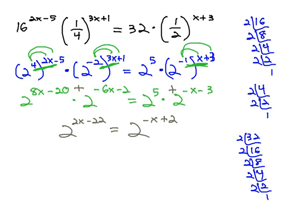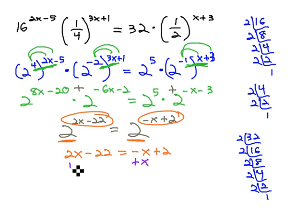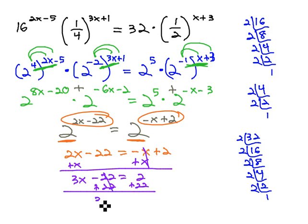Finally, we're ready, same base, we can set our exponents equal. 2x minus 22 equals negative x plus 2, and we should be able to quickly solve. Adding x to get 3x minus 22 equals 2, adding 22 to get 3x equals 24, and dividing by 3 to get x equals 8.